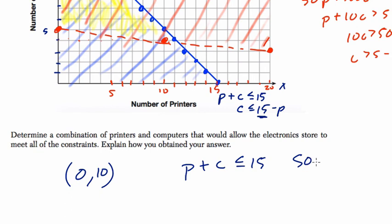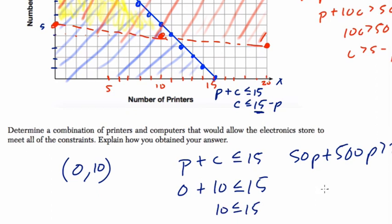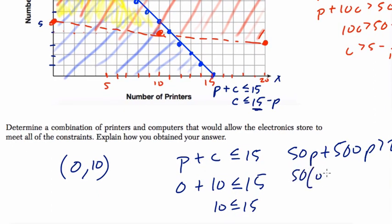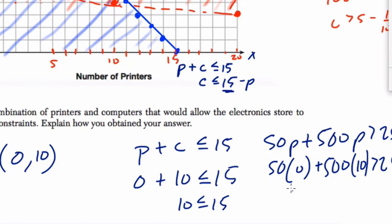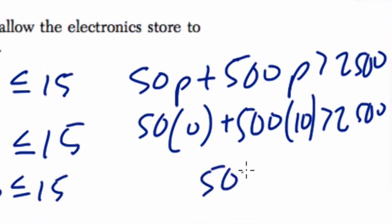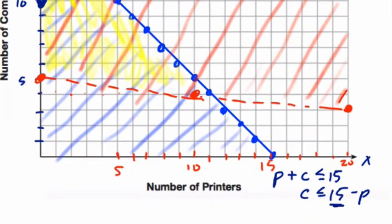And I'm going to say it works for both inequalities. That's our first inequality. This is our second inequality. And if we plug in 0 and 10, it works for both. 0 for printers, 10 for computers. Is that less than or equal to 15? Yes. 10 is less than or equal to 15. 50 times 0 plus 500 times 10. Is that greater than 2,500? Yes. 0 plus 5,000. That is greater than 2,500. And I would say explicitly, it does work for both inequalities. Thanks.